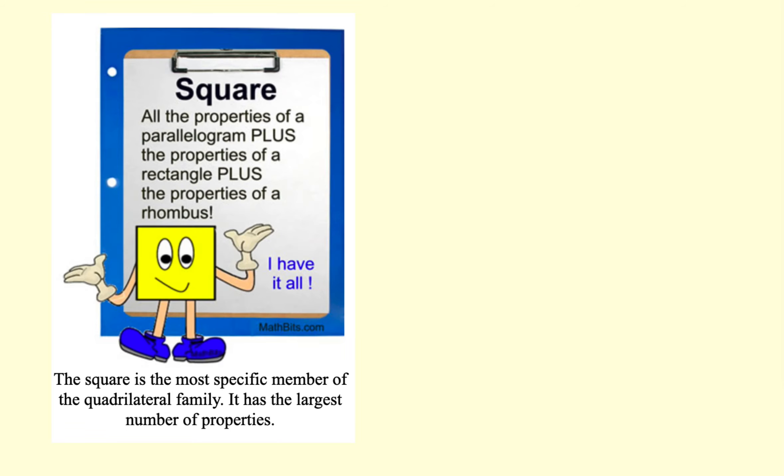Our last special quad that we want to talk about is a square. A square is a parallelogram, it's also a rectangle, and it's also a rhombus. So it gets all the properties that we have stated about all these others. Let's use these properties on some problems.